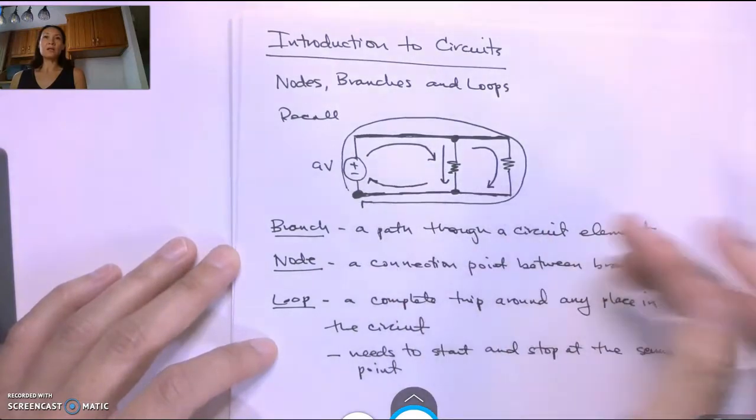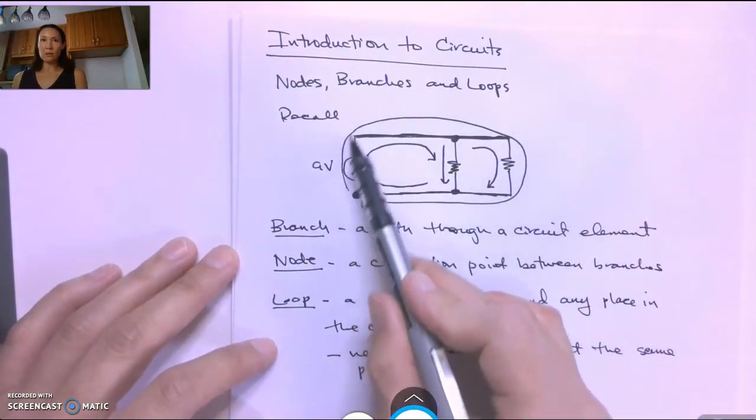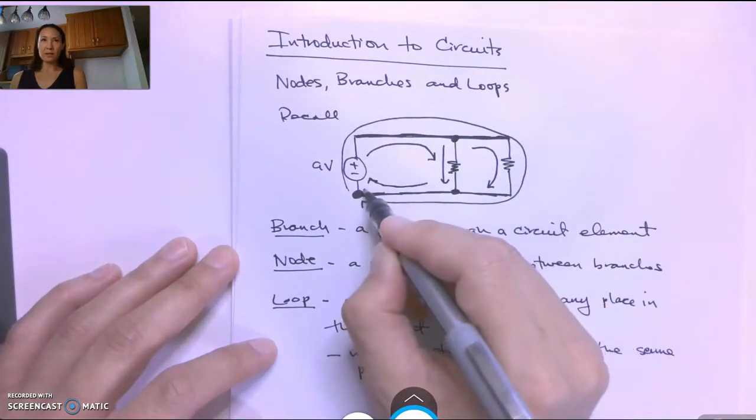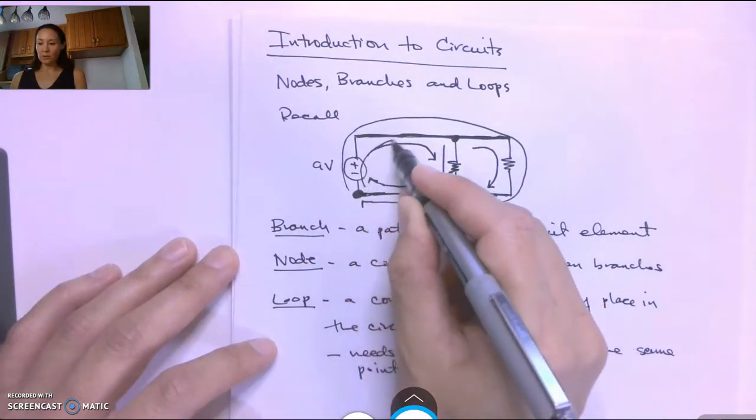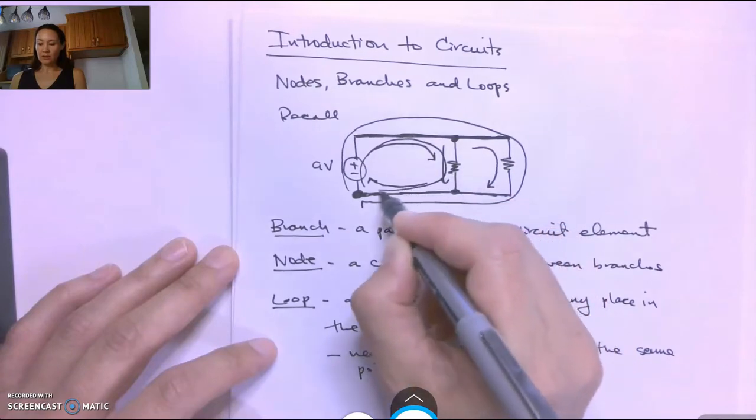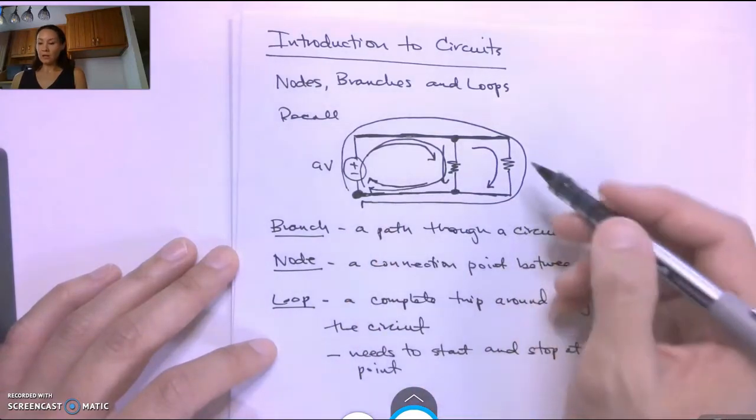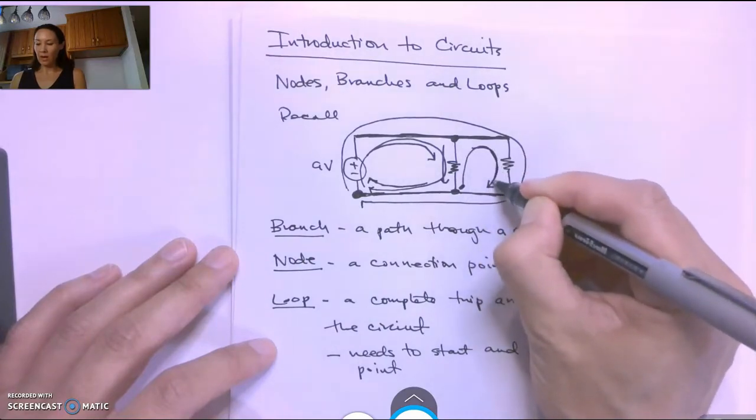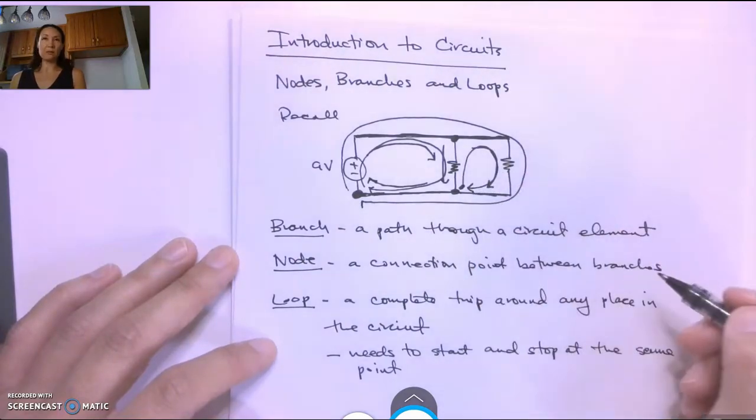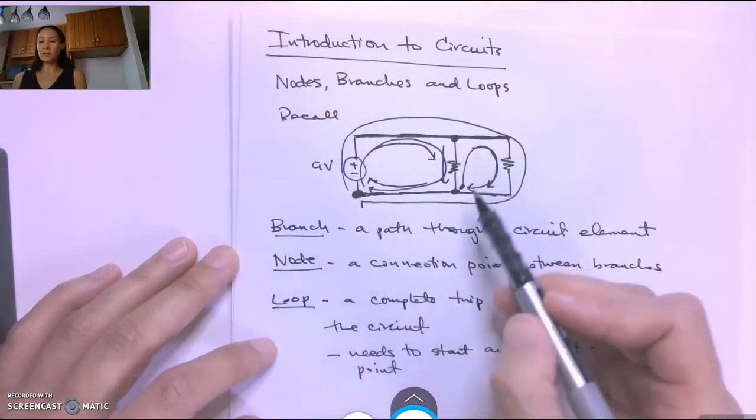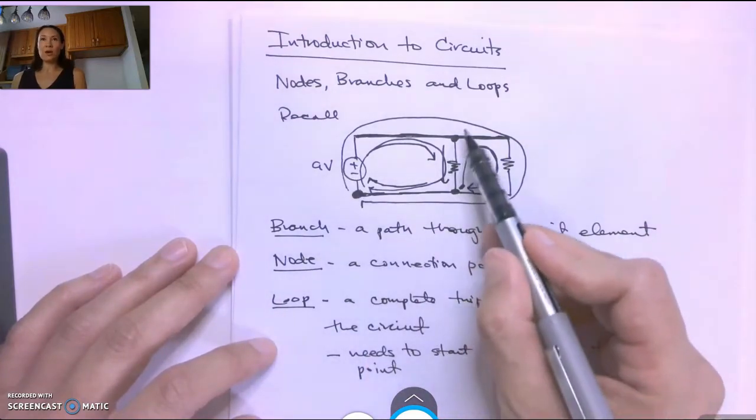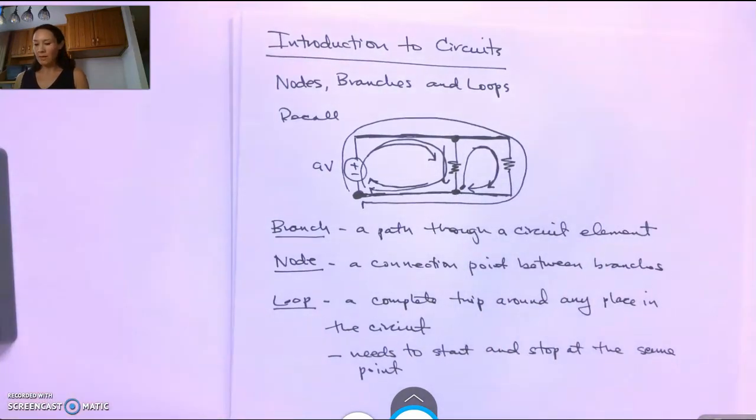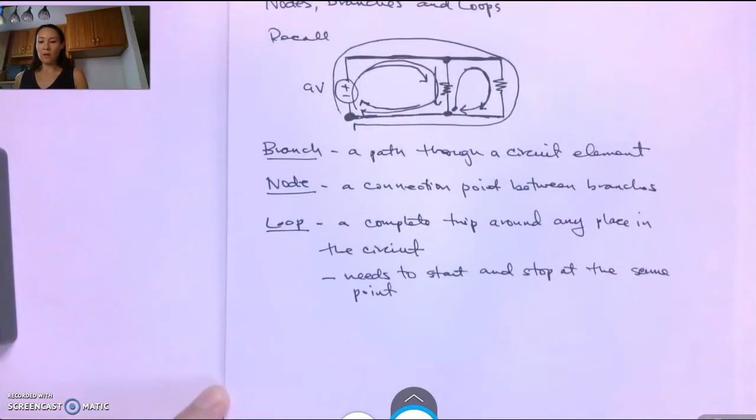Okay so circuits often times have multiple loops. I have this loop that goes around the outside. I also have a loop that starts here and goes through this first resistor and back. I also have a loop that starts here and goes around the second branch and comes back. So as long as you start in one place, you travel around a loop in the circuit and come back to the same place. That's the definition of a loop.